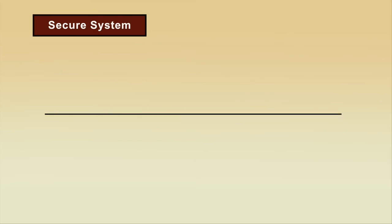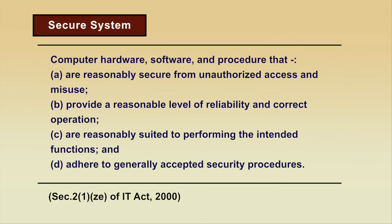Secure system, per section 2(1)(ze) of IT Act 2000, is described as computer hardware, software, and procedures that are reasonably secure from unauthorized access and misuse, provide a reasonable level of reliability and correct operation, are reasonably suited to performing intended functions, and adhere to generally accepted security procedures. According to this act, one can define and certify whether a system is secure or not.